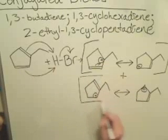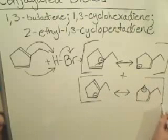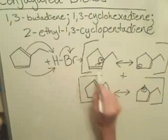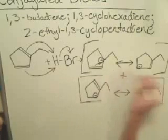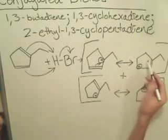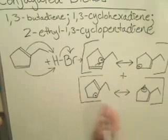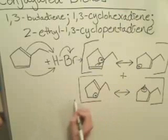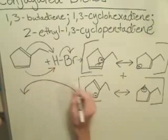Now when we add these bromine anions up on this molecule, these two molecules, these two resonance forms, we're going to get two different molecules as a result.